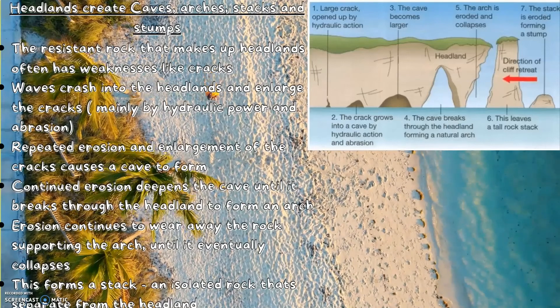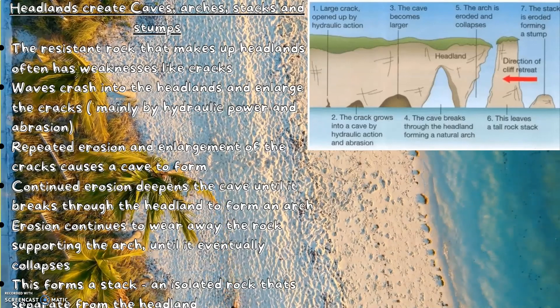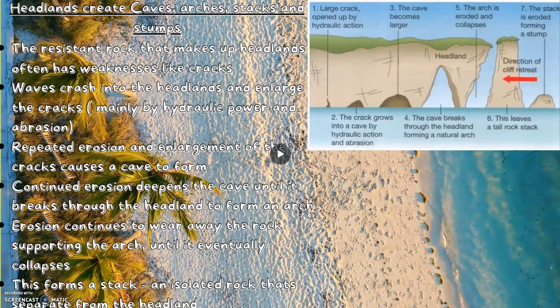Headlands create caves, stacks and stumps. The resistant rock that makes up headlands often has weaknesses like cracks. Waves crash into the headlands and enlarge these cracks, mainly by hydraulic power and abrasion. Repeated erosion and enlargement of the cracks causes a cave to form. Continued erosion deepens the cave until it breaks through the headland to form an arch. Erosion continues to wear away the rock supporting the arch until eventually it collapses, forming a stack — an isolated rock that is separate from the headland.